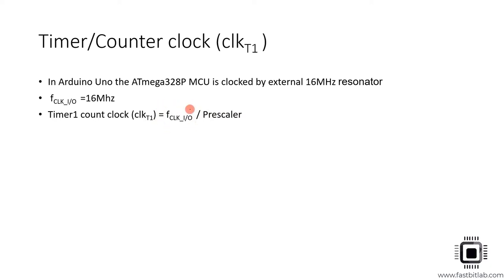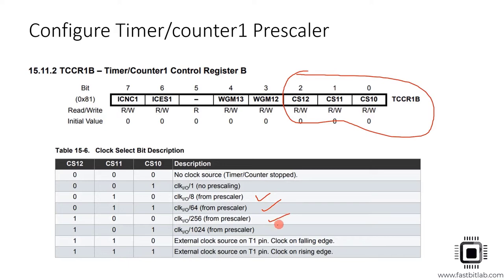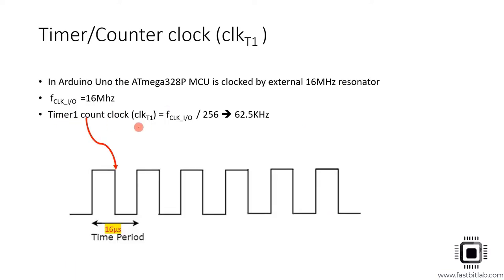You control the pre-scaler using the TCCR1B register, and you can select pre-scaler values of 8, 64, 256, or 1024. We will use a pre-scaler of 256 for this application. So the timer count clock equals the main clock of 16 MHz divided by 256, which gives 62.5 kHz. That means the timer count clock has a period of 16 microseconds — the count increments every 16 microseconds.